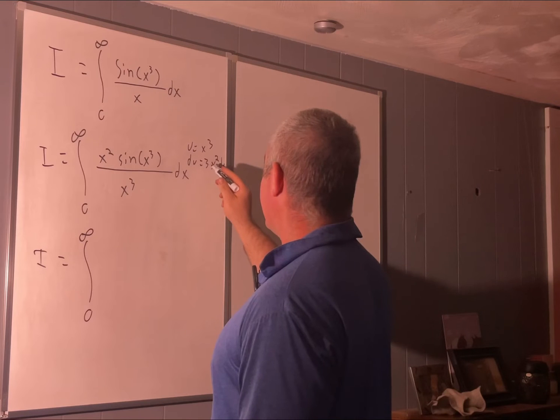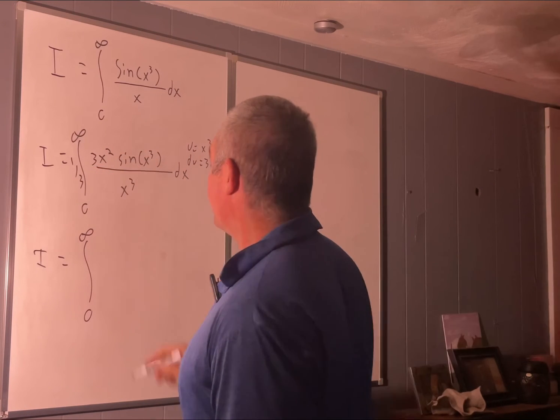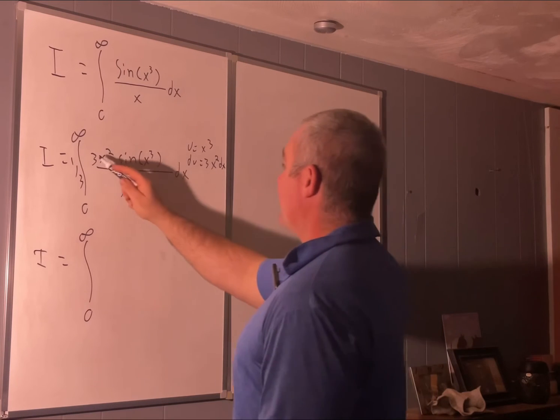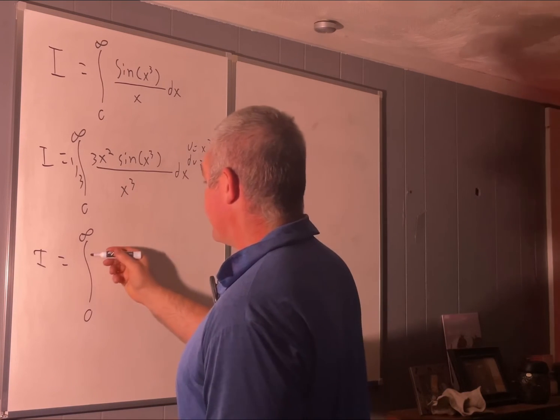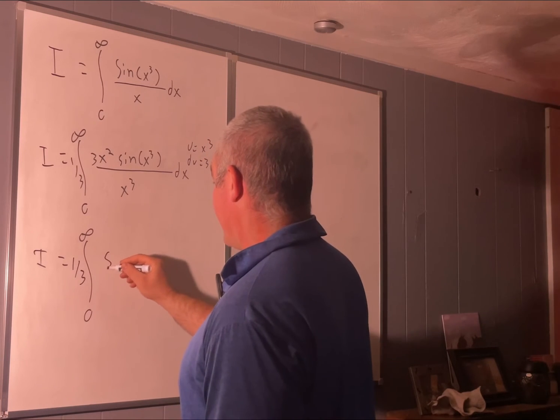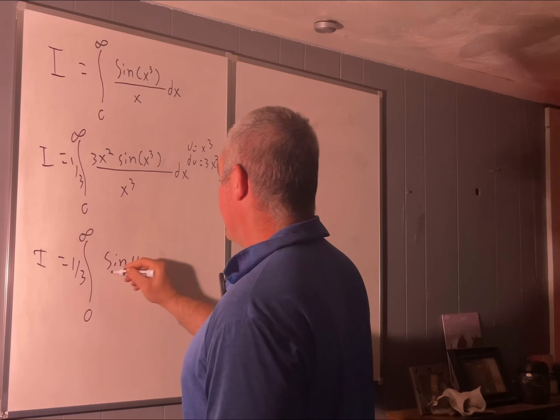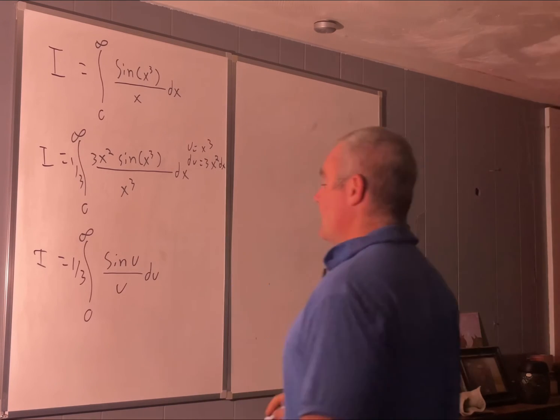If we put a 3 here and then divide by one third, we'll have our 3x squared dx for our du. So we'll just have one third sine u over u du, and we all